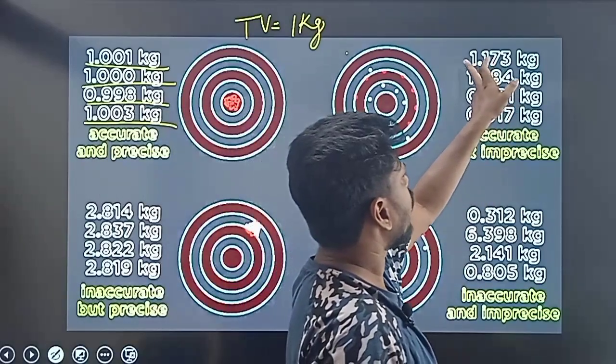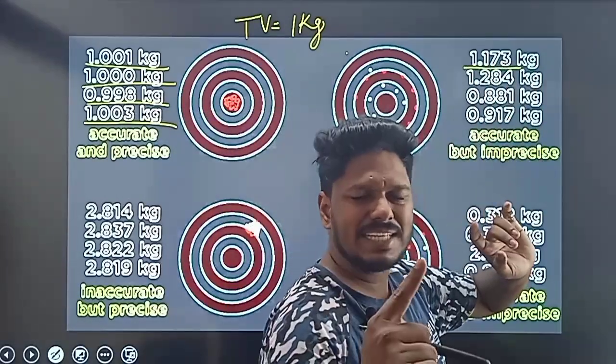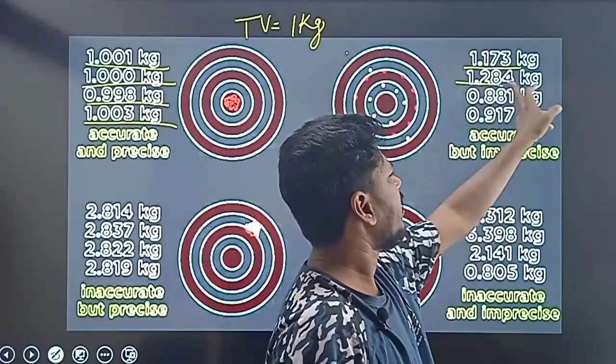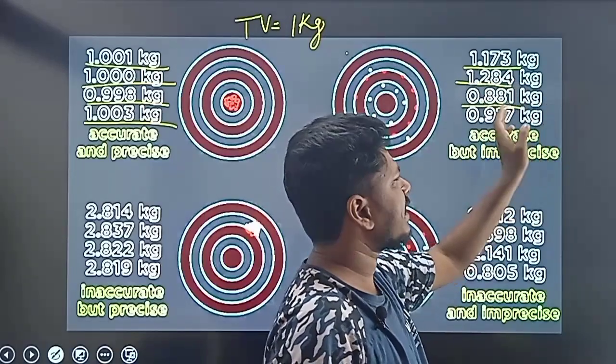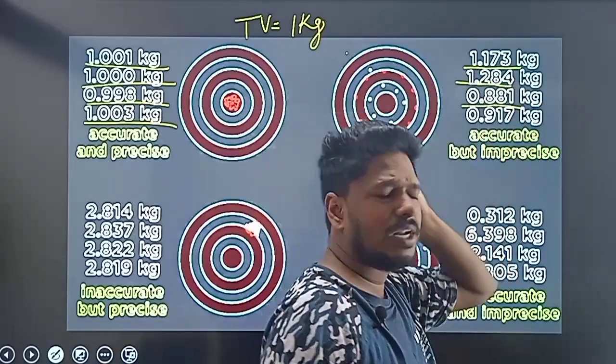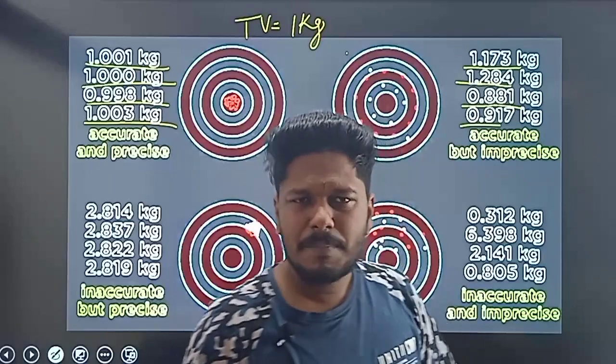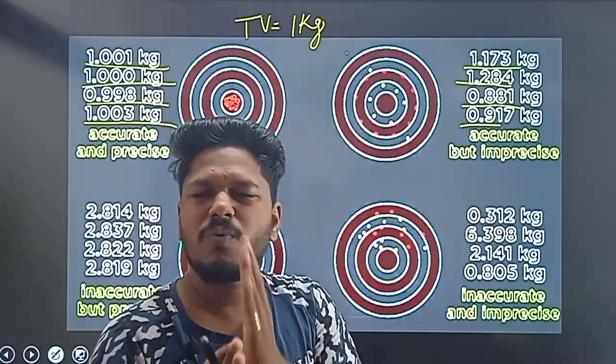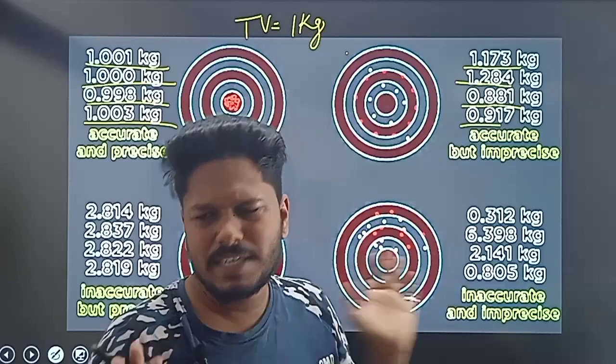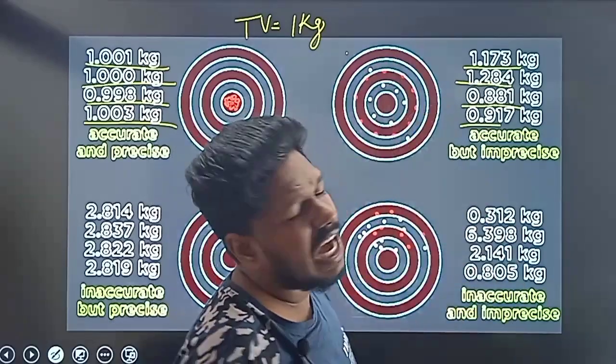When you measure and get values like 1.001, 1.000, 0.998, or 1.003 - these are accurate and precise.